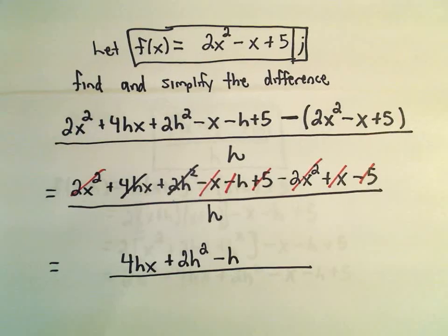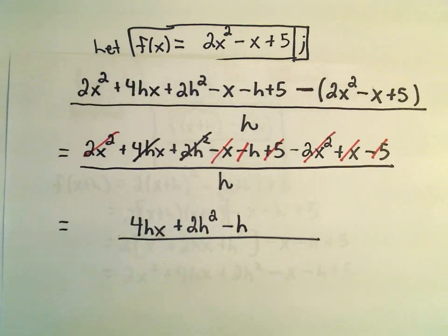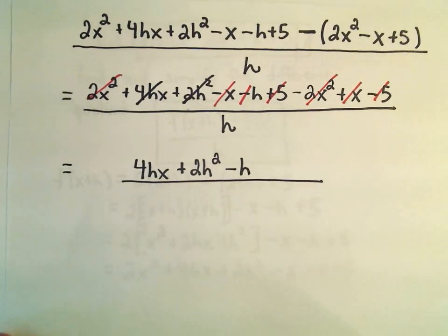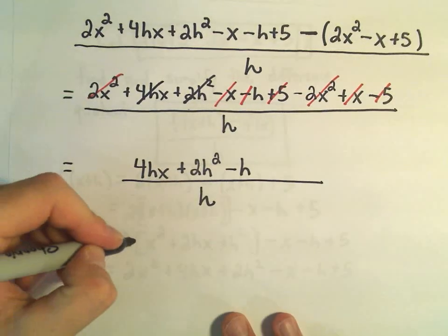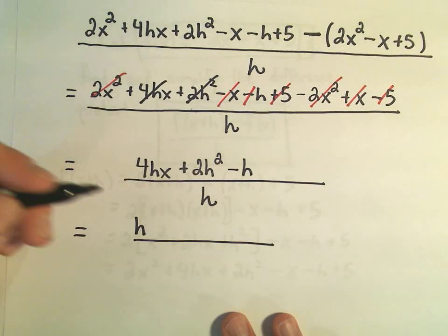So it looks like the numerator just simplifies to 4hx plus 2h squared minus h. That's all being divided by h. But now what we can do, we can actually do a little bit more simplification. Because notice everything in the numerator has an h in it. So I can actually factor that h out.